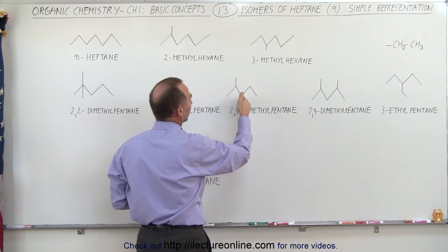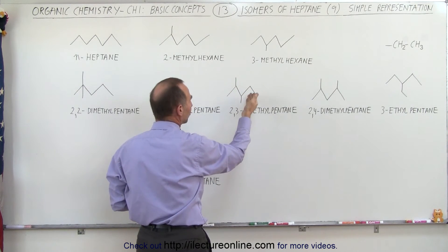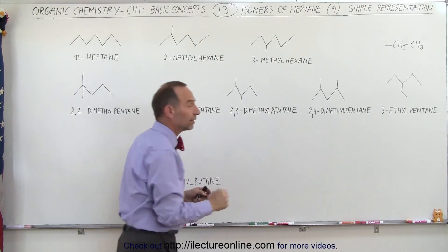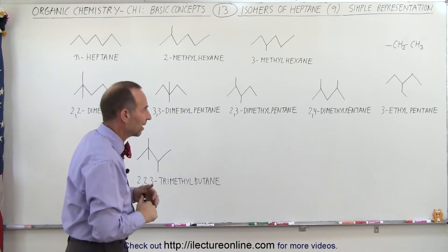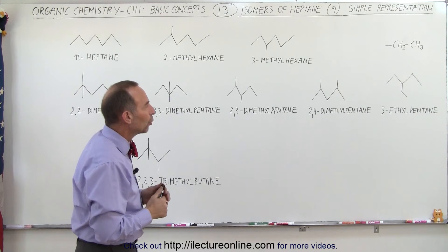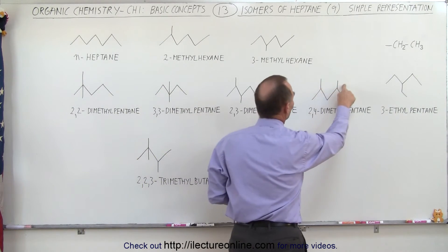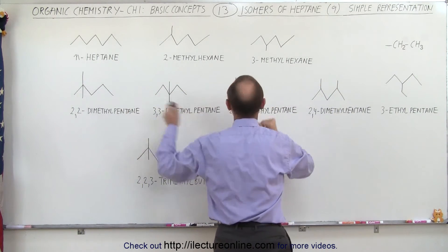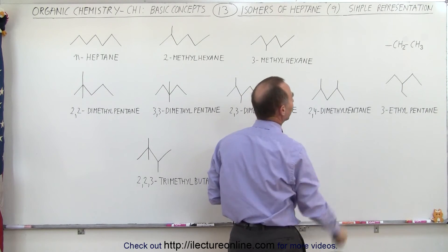If we connect one to the third and one to the fourth, that's exactly the same as one to the second and the third if we flip the molecule around, so therefore it's exactly the same thing. Now we can also connect it to the second and the fourth. That's different, we don't have that yet here, so we have a 2,4-dimethylpentane.